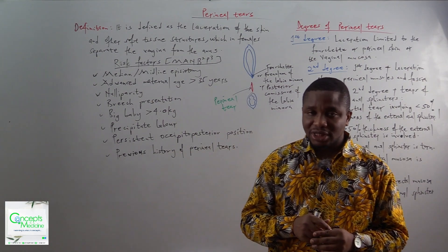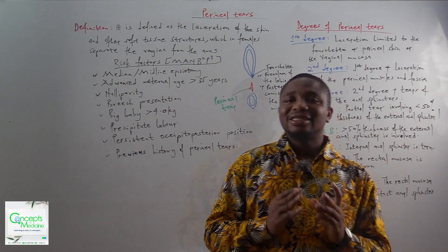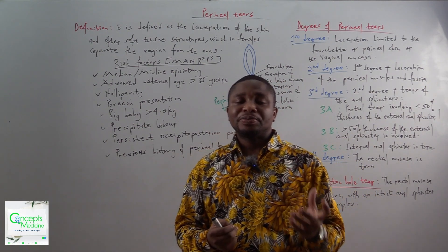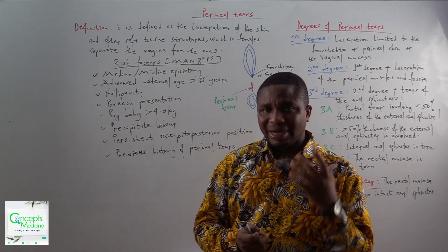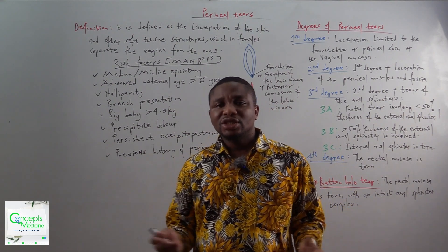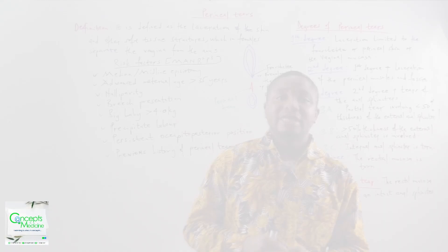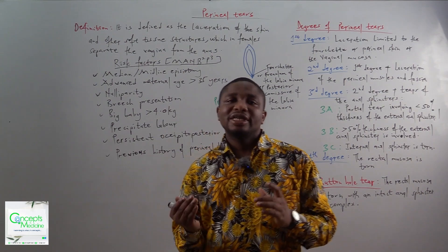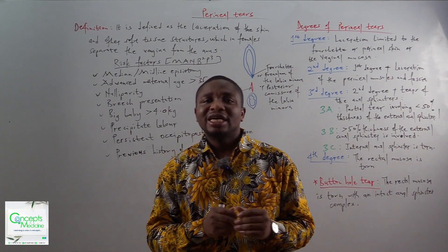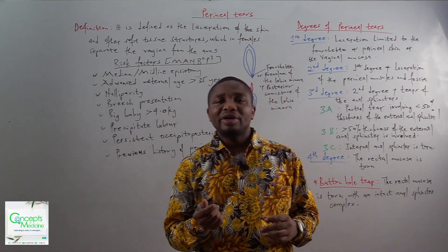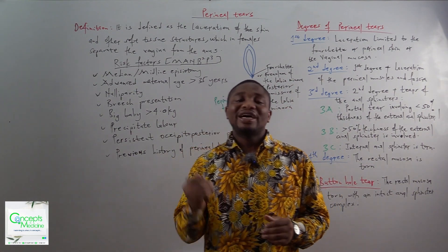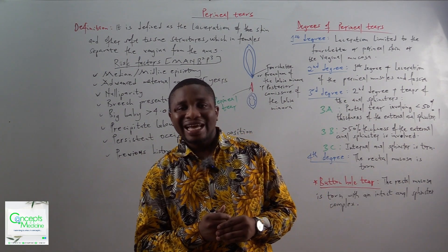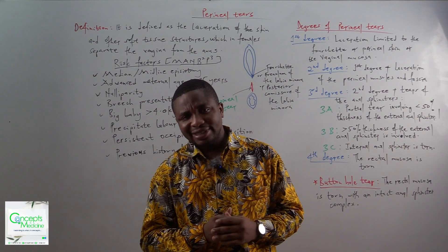The next risk factor is persistent occipital posterior position, meaning the occiput is inclined to the sacrum. In fetal positions, we refer to the relationship of the prominent parts of the presenting part in relation to fixed points of the maternal pelvis. Here we have a vertex presentation whose denominator is the occiput lying closer to the sacrum. If this position is persistent, it will distend the perineum, causing a tear. Finally, the last risk factor is a previous history of perineal tears, since if it has happened before, there is a likelihood of it happening again.